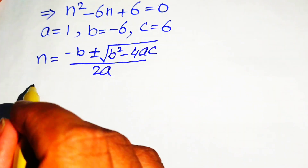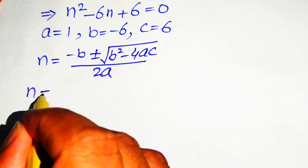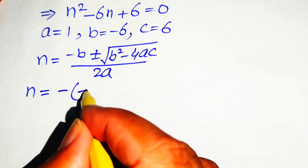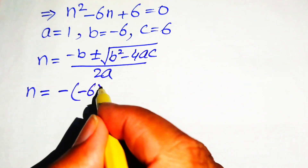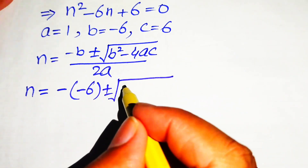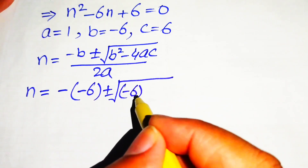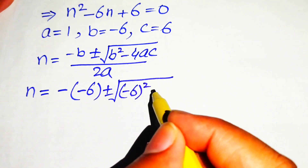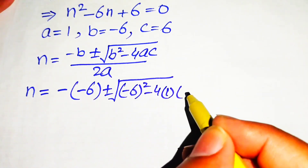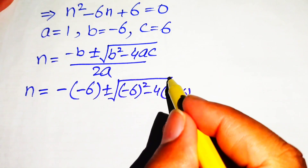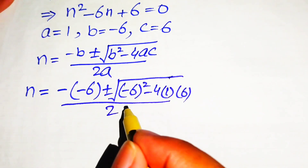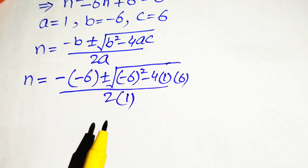Substituting the values of a, b, and c into the formula, we get n equals minus of (minus 6) plus or minus the square root of (minus 6) squared minus 4 times 1 times 6, all divided by 2 times 1.